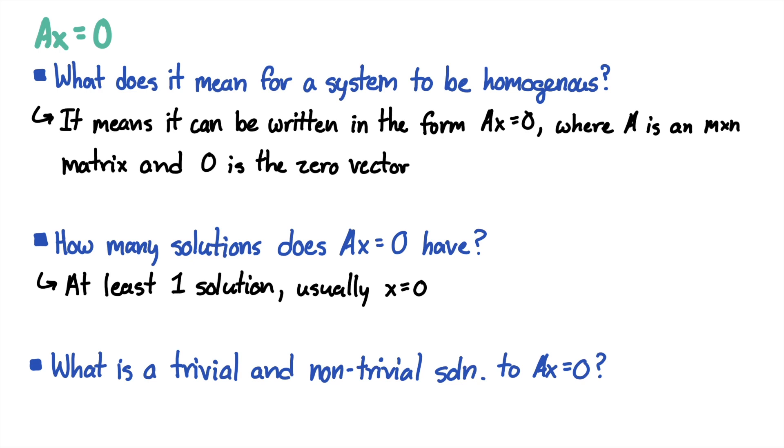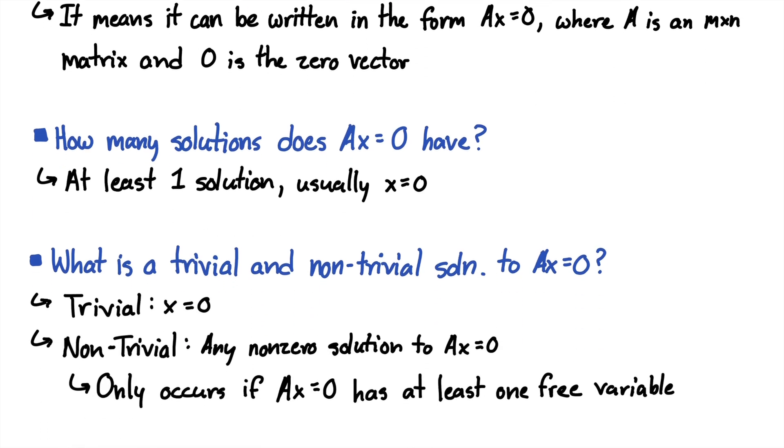Now what is a trivial and non-trivial solution? The trivial solution is X equals 0. The non-trivial solution is any nonzero solution to AX equals 0, which means that X is not the zero vector, but AX still equals 0. This only occurs if there's a free variable.